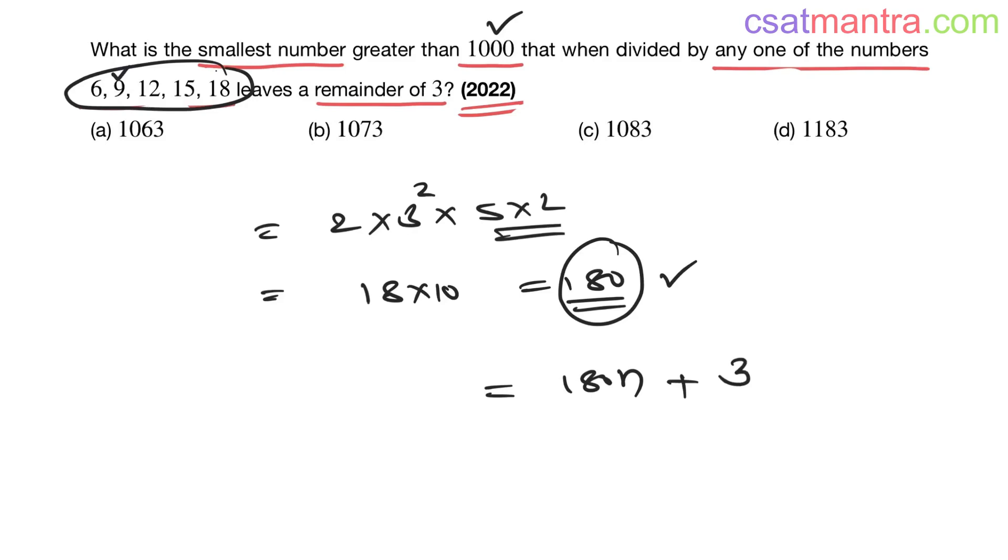180 × 5 = 900, so n = 5 does not satisfy. 900 + 3 = 903. Our number should be greater than 1000. Take n = 6: 900 + 180 = 1080. 1080 + 3 = 1083.